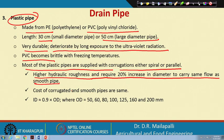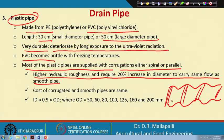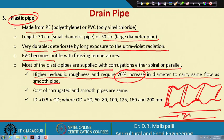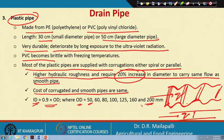Corrugated pipes are available because they are easier to transport and can be obtained in larger lengths in a single piece. However, corrugations cause higher hydraulic roughness and require a 20 percent increase in diameter to carry the same flow as a smooth pipe. The internal diameter is equal to 0.9 times the outer diameter, where outer diameters vary from 50 to 200 mm.